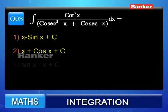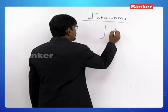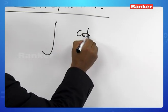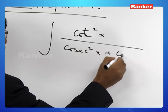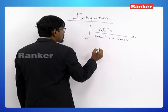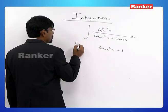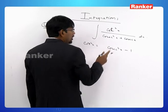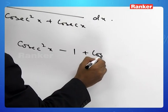Question number 3: integral of cot²x divided by (cosec²x + cosec x) dx. Options: x − sin x + c; x + cos x + c; x sin x − x + c; x − cos x + c. We write cot²x as cosec²x − 1. The denominator is cosec²x + cosec x. We add and subtract cosec x in the numerator to facilitate cancellation.